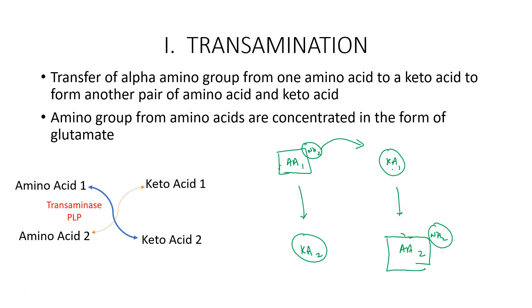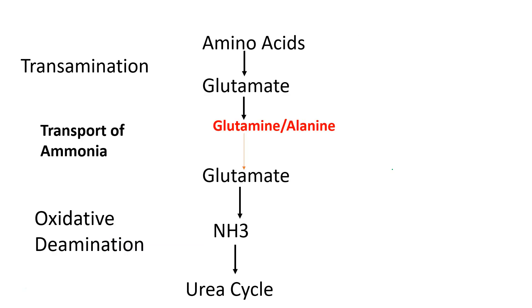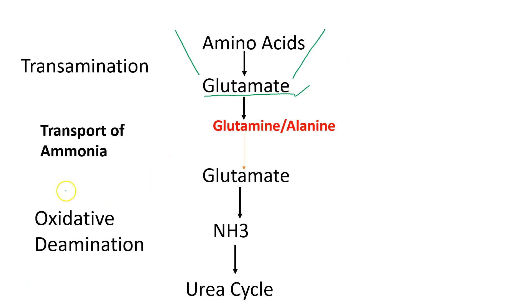The amino groups from the amino acids are funneled to form glutamate. This is because the amino groups will otherwise release ammonia, which is toxic to the body. All amino acids in the body undergo transamination to form glutamate, because glutamate is the only amino acid that can undergo significant oxidative deamination.